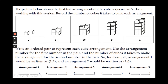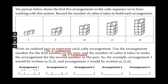Now we're going to write an ordered pair to represent each cube arrangement. Use the arrangement number for the first number — the x-coordinate — and the number of cubes it takes to make the arrangement for the second number — the y-coordinate. For example, arrangement one is written as (1, 2), and arrangement two is (2, 6). Now write coordinate pairs for arrangements three, four, and five on your own. Arrangement three: x is 3, y is 10 — so (3, 10). Arrangement four: (4, 14). And arrangement five should be (5, 18).